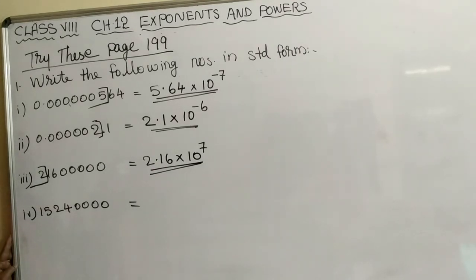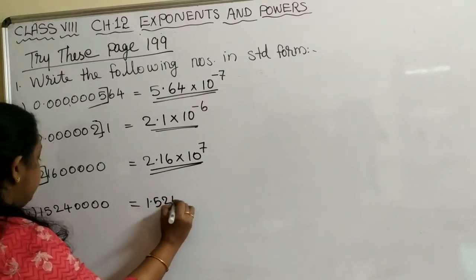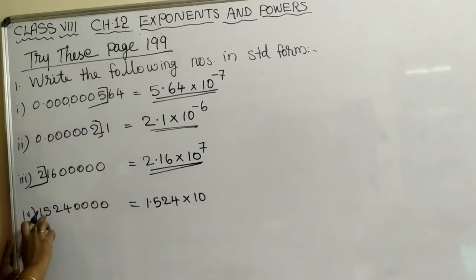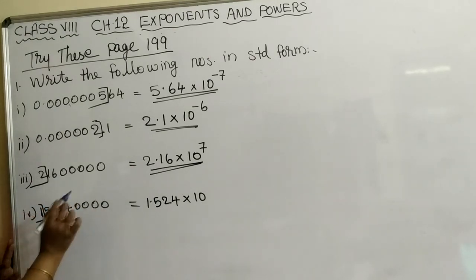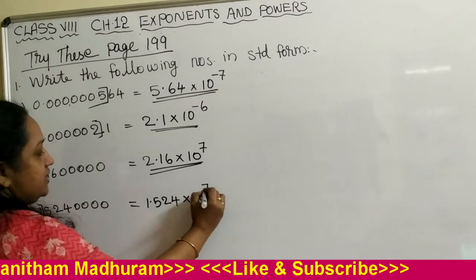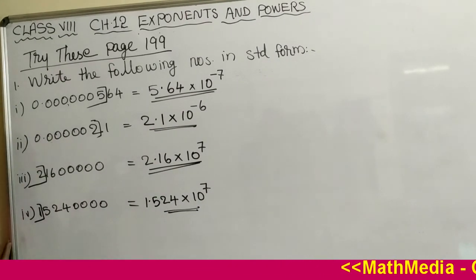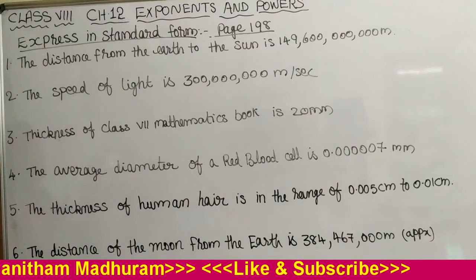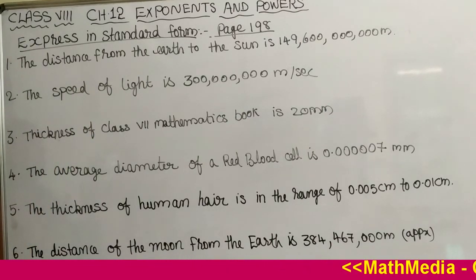The next number is also a whole number. After the first digit, put the decimal point and write all the non-zero digits. For the power of 10, remove the first digit and count the remaining digits — there are 7. So we write 10 raised to 7. The standard form of this number is 1.524 into 10 raised to 7. Now we move to page number 198: express the following in standard form.